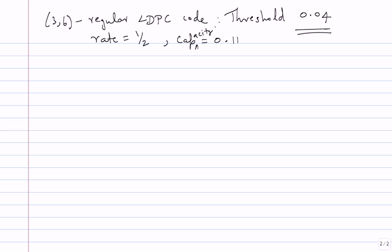The capacity is 1 minus h(0.11) equals half — I showed you the plot and said 0.11 is where it gets to half. This is the scene with regular codes. Maybe you need something else from the ensemble. The definition is still very general — sparse LDPC codes — maybe there are so many sparse matrices you need more structure. There is a very nice way of introducing that structure based on column weights and row weights.